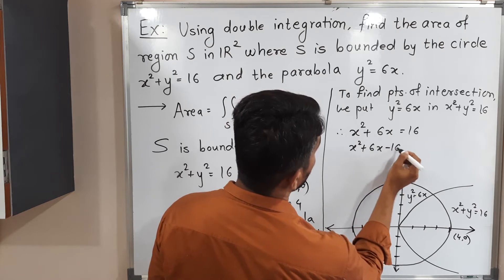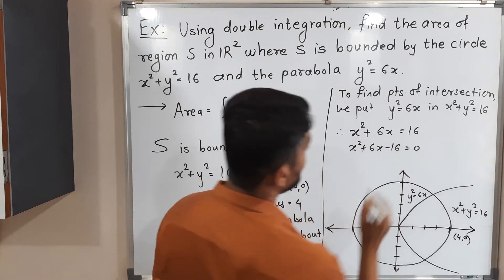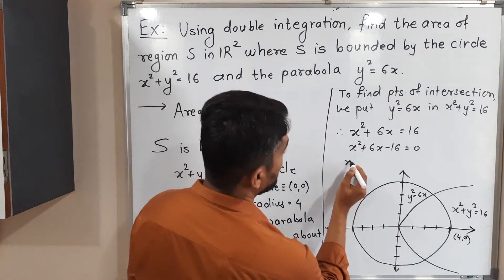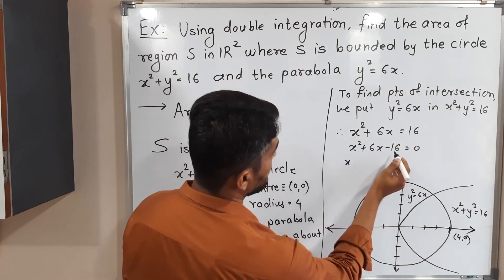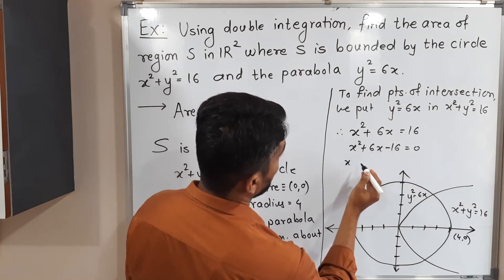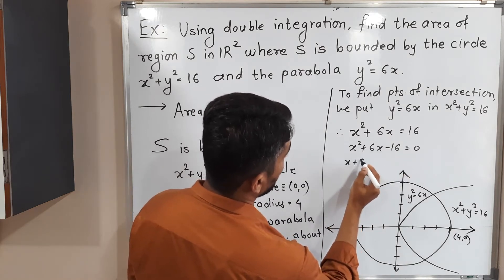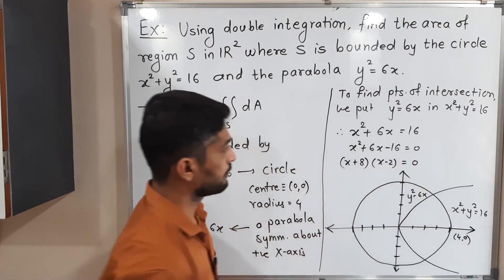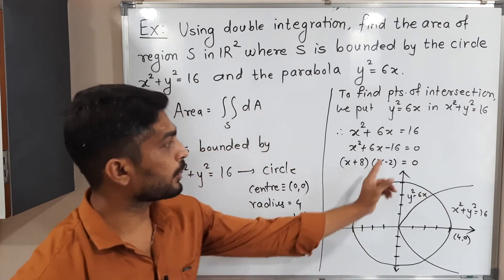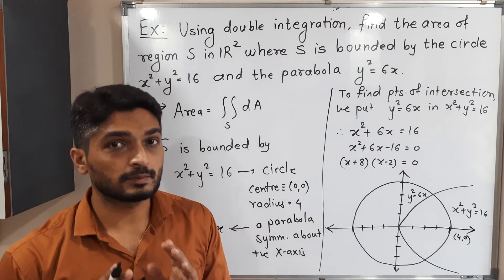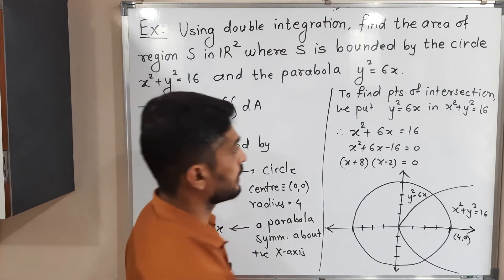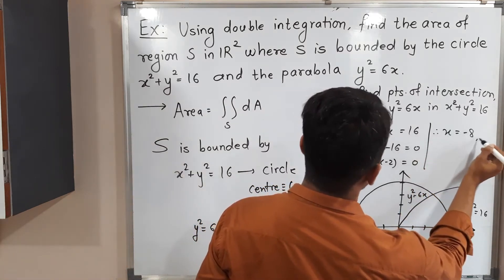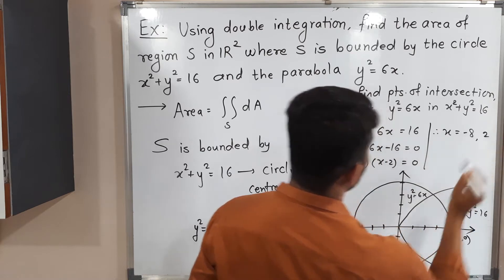So x² + 6x - 16 = 0. We find the factors: (x + 8)(x - 2) = 0, since the product is -16 and the sum is 6. Therefore either x = -8 or x = 2.